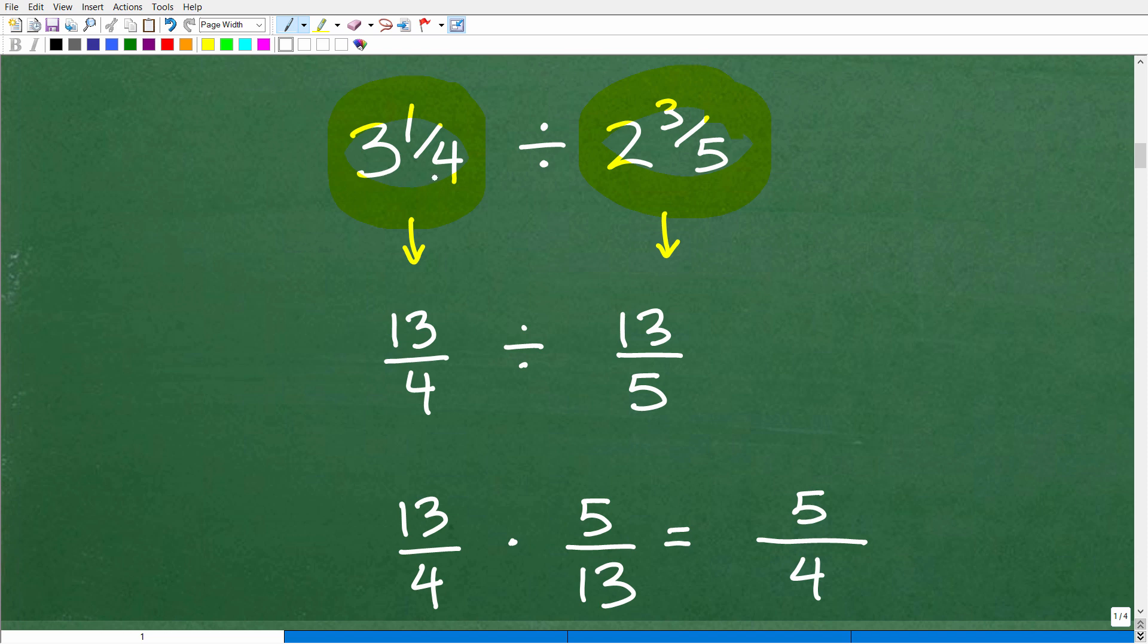So 3¼, again, we're going to go 4 times 3 is 12. 12 plus 1 is 13. So this mixed number, 3¼, is equal to the fraction 13 fourths as an improper fraction. So we're going to do the same with this fraction. 5 times 2 is 10. 10 plus 3 is 13. So it's going to be 13 over 5. So that's the first step you do is you get out of your mixed number fractions and you write this as two improper fractions. Of course, now we're dividing.